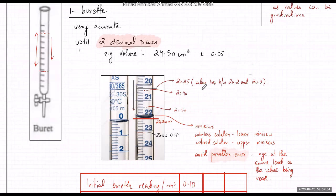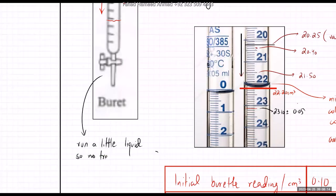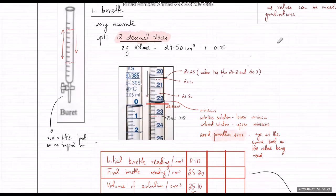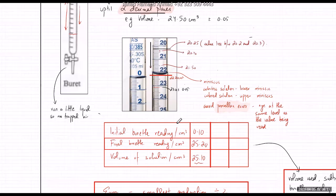When using a burette, make sure there is no trapped air. Run a little liquid through to ensure no air is trapped. When constructing your results table, record the initial burette reading, the final burette reading, and calculate the difference to get the volume of solution used.